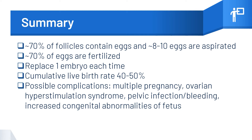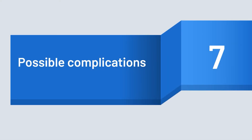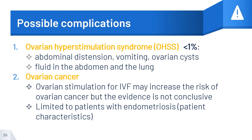IVF is also associated with possible complications, including multiple pregnancy, ovarian hyperstimulation syndrome, pelvic infection, bleeding, as well as increased congenital abnormalities of the fetus. Ovarian hyperstimulation syndrome occurs in some women, and they present with abdominal distension, vomiting, ovarian cysts, and fluid in the abdomen and the lungs. Ovarian stimulation for IVF may also increase the risk of ovarian cancer, but the evidence is not conclusive and is often limited to patients with certain characteristics.